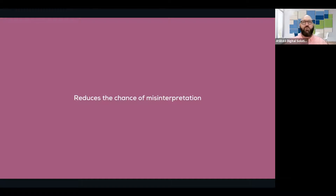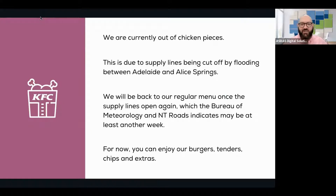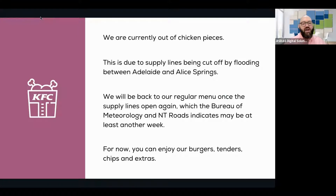But how do we apply that in the real world? Because it all sounds like a great university theory, but how do we make it work? Let's look at the example of KFC in Alice Springs. They had a lovely photo of a sign saying: 'We are currently out of chicken pieces. This is due to supply lines being cut off by flooding between Adelaide and Alice Springs. We'll be back to our regular menu once the supply lines open again, which the Bureau of Meteorology and NT Roads indicates may be at least another week. For now, you can enjoy our burgers, tenders, chips, and extras.' This is the perfect KUBA.